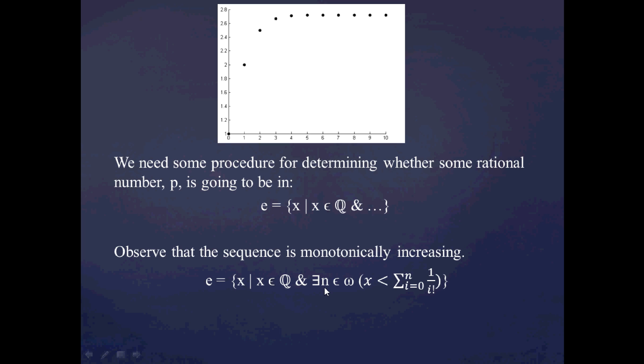Which means that I should be placing it inside the Dedekind cut. So, basically that observation that there comes a point at which the sequence of partial sums exceeds the test value, the rational number that I'm interested in, gives rise to the following definition. Let's suppose we define E as all of the rational numbers such that there's some other natural number, N, such that the partial sum up to that point exceeds the test value, X.